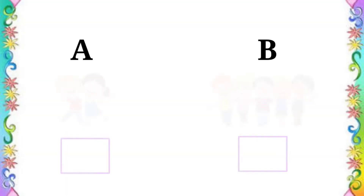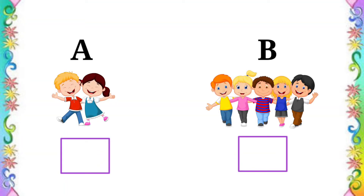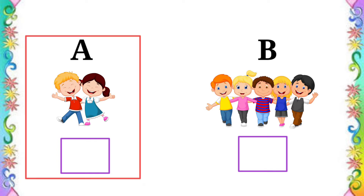Here are two sets of children: A and B. Let's count A set. 1, 2. A set has 2 children.